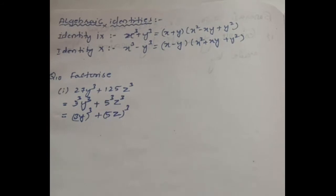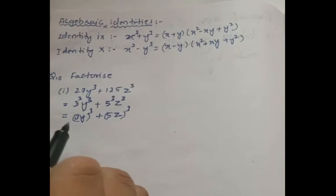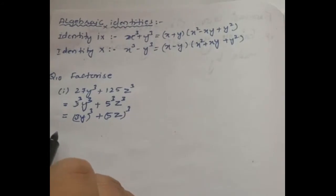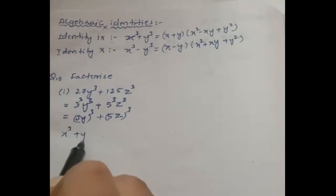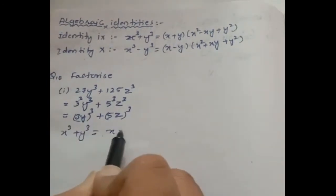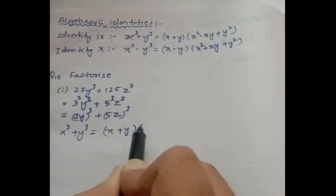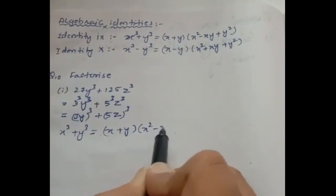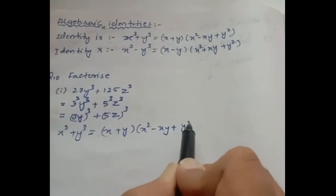This expression is now in the form of x cube plus y cube, where x is 3y and y is 5z. We will first write the identity that is useful here: x cube plus y cube is equal to x plus y into x square minus xy plus y square.